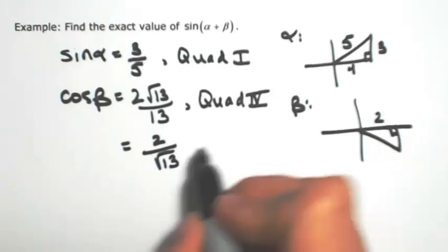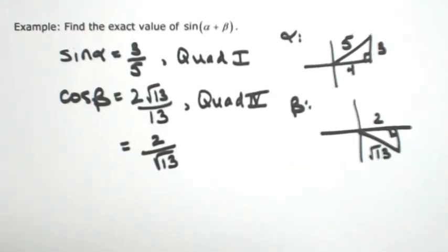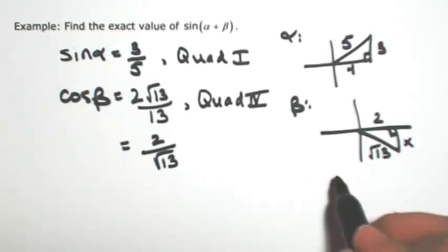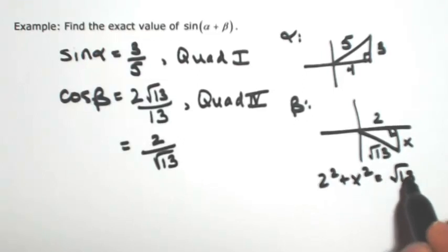So the adjacent side is going to be 2, hypotenuse is going to be root 13. So to find that missing side, I'm going to call it x just for a second. So 2 squared plus x squared is root 13 squared.